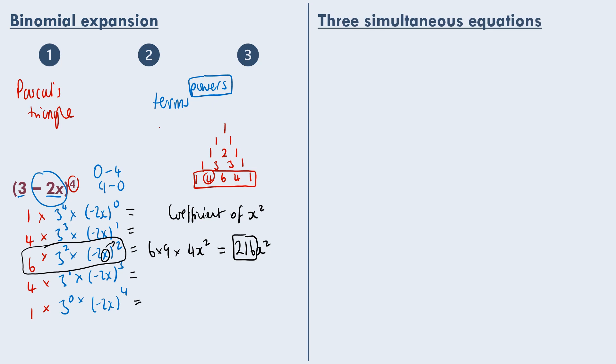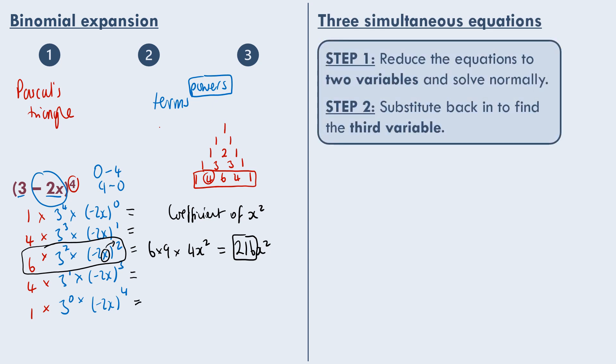Moving on to three simultaneous equations. These ones can be quite tricky, not in the sense of a method as much, but more in not making a mistake. Your method is quite simple. You just need to reduce the equations to two variables and solve normally and substitute back in to find the third variable.